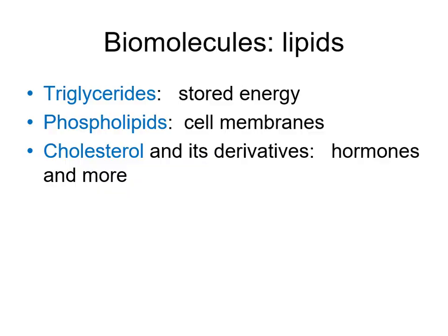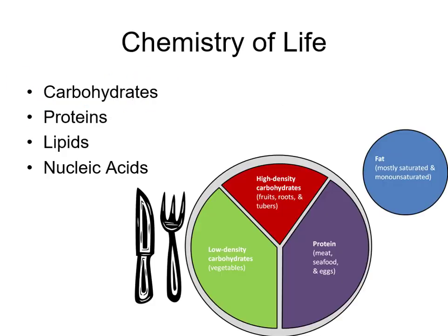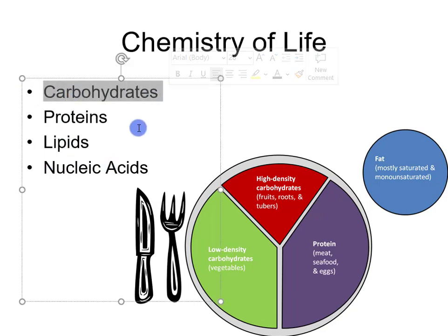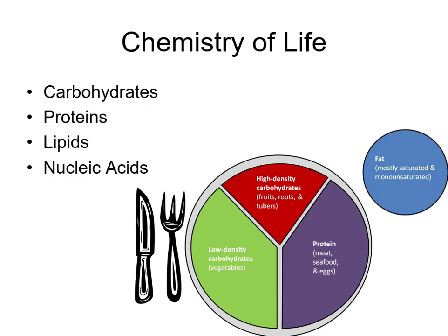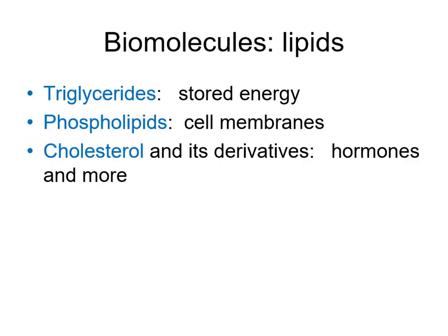In this video we want to continue our conversation on lipids. Just to keep on track with where we're at, remember that the four big biomolecules are carbohydrates, proteins, lipids, and nucleic acids. At this point, you've learned everything you need to know about carbohydrates, and we have introduced lipids to you. When it comes to lipids, there are three big types: triglycerides, phospholipids, and cholesterol.